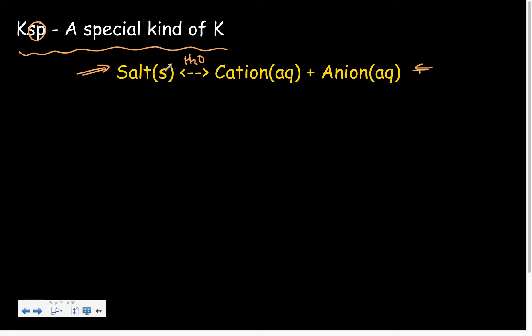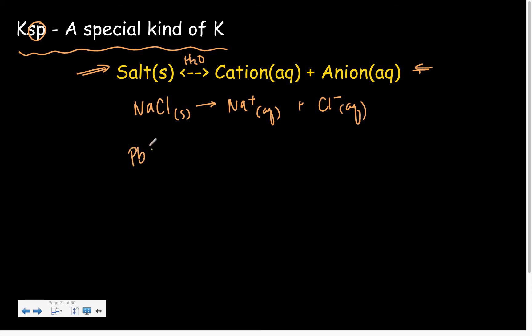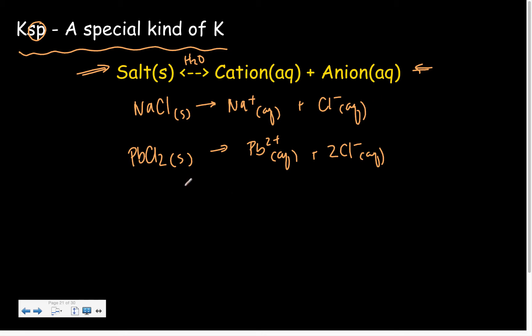In this case, it's the situation where a solid salt dissolves in water to form ions. For example, if we have NaCl solid, that's going to form sodium ions and chloride ions. Now let's take another salt — lead chloride — which is on our list of solubility rules as being a precipitate, as being insoluble.